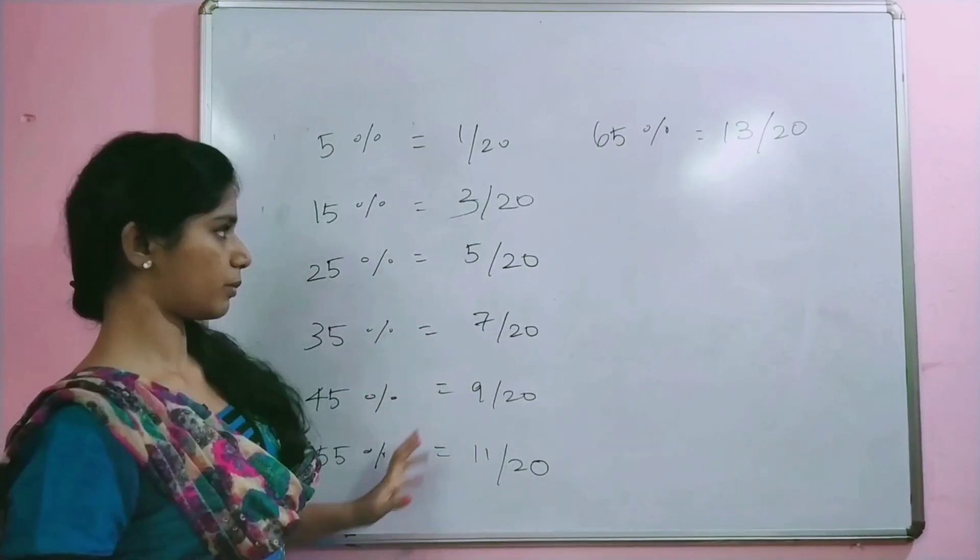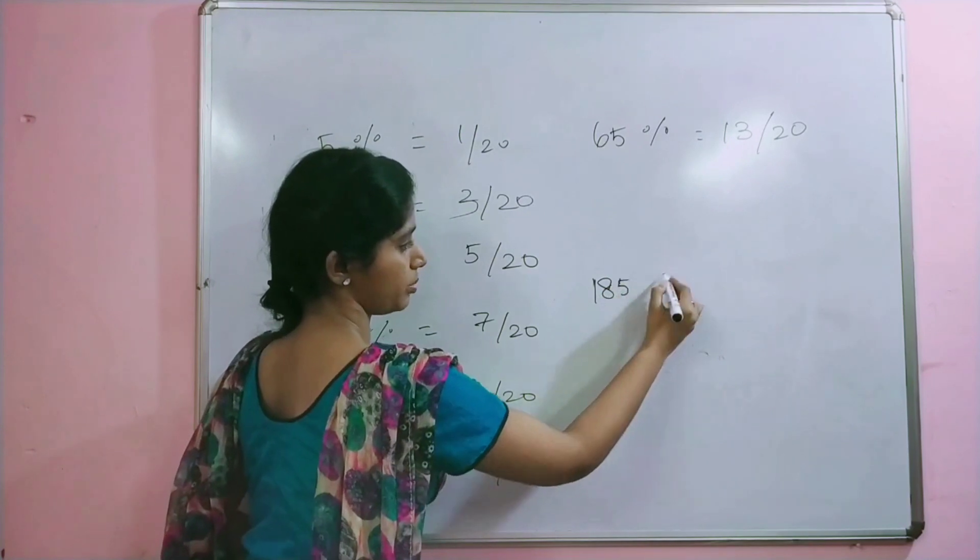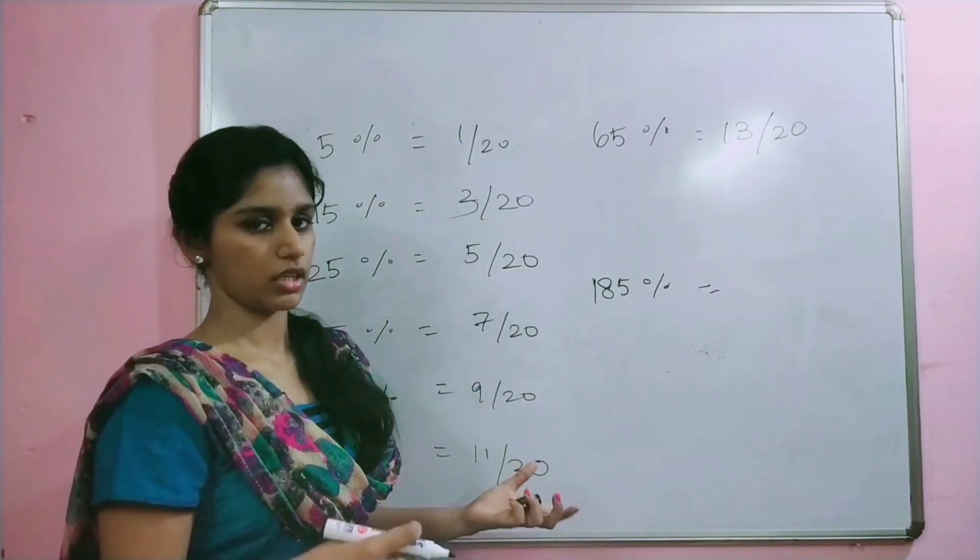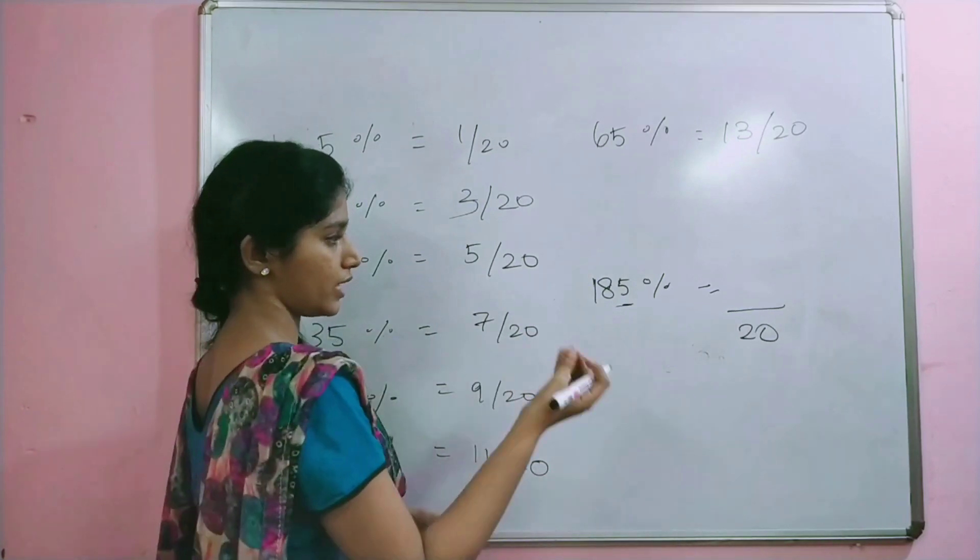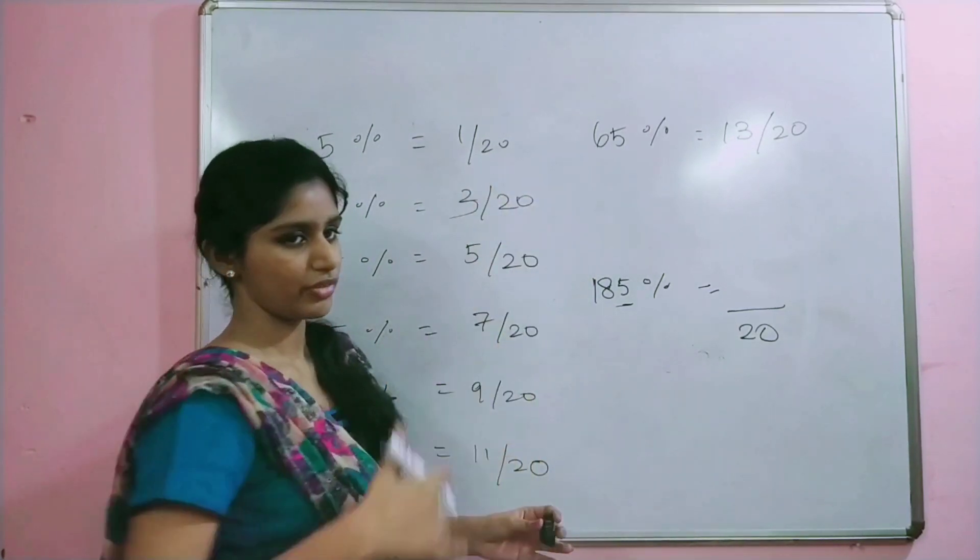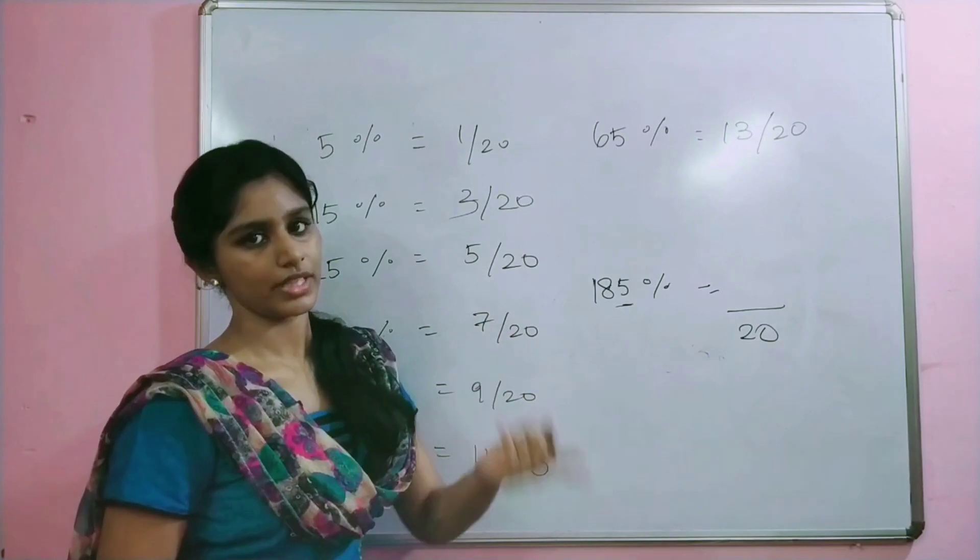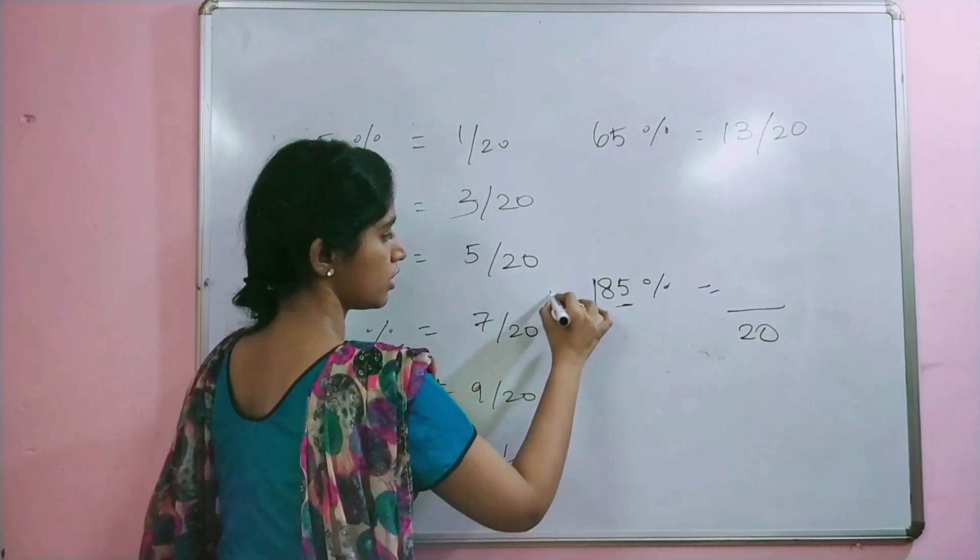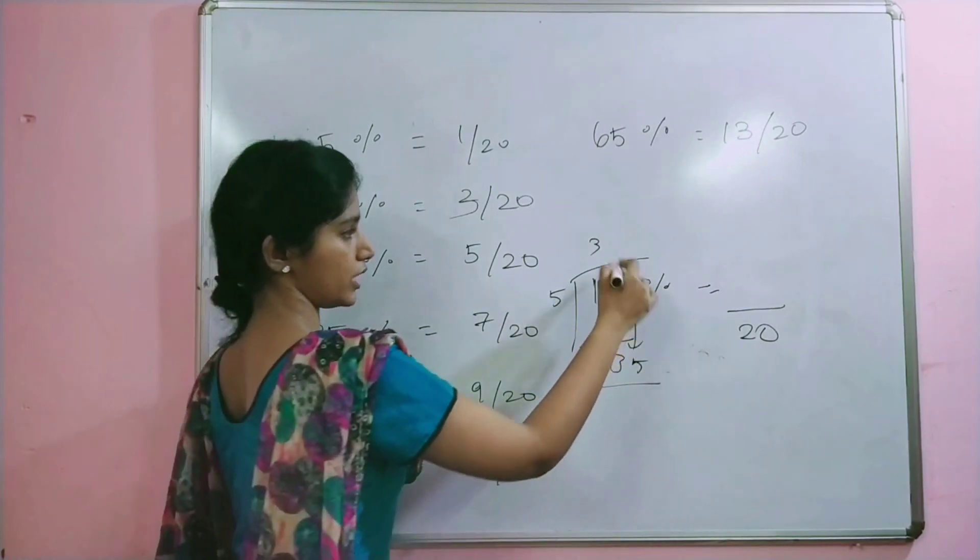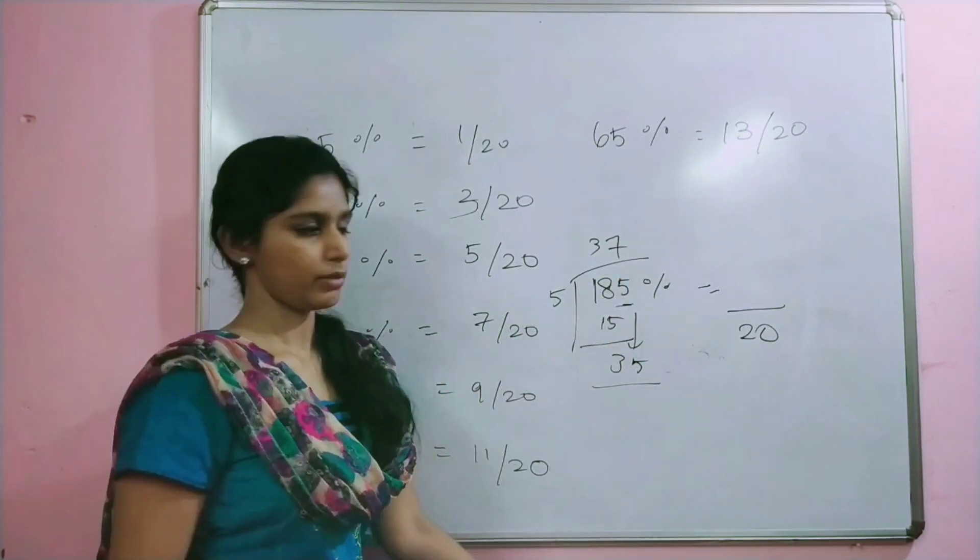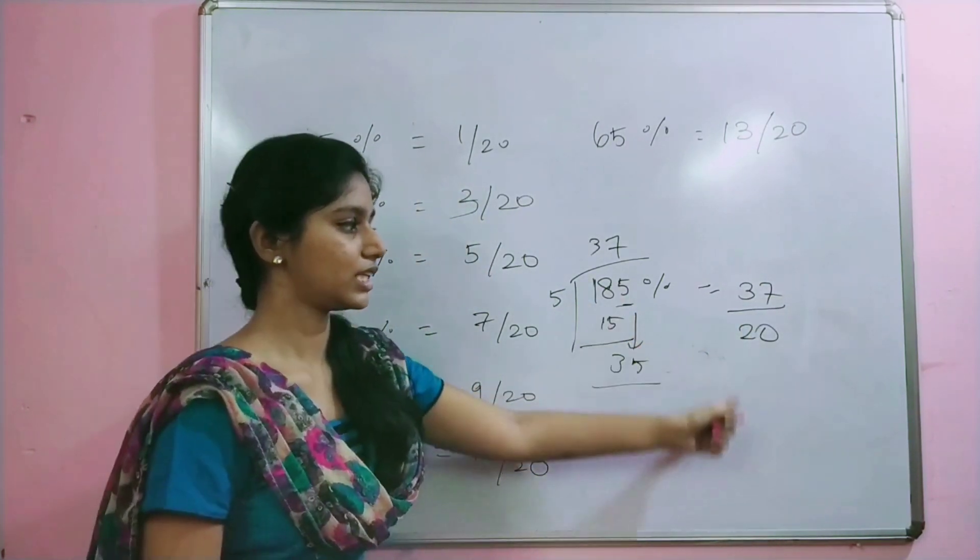For example, 185 percentage. How do you find it? The denominator is 20 because it ends in 5. The numerator follows the full odd series: 1, 3, 5, 7. 185 is 5 table 37 times. So I am putting here 37. 185 is 37 by 20 percentage.